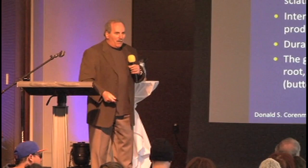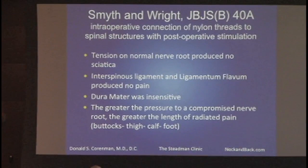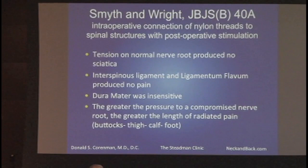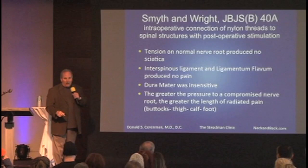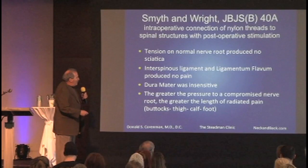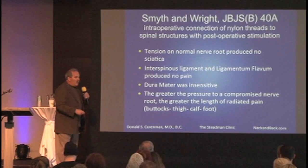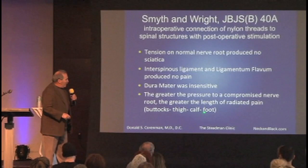How do we know what causes pain? There are some fascinating studies from the 1960s — Smith and Wright out of Britain. They would do spine surgery and loop a nylon suture around different structures — nerve, disc, dura — with labels sticking out. A normal nerve root tensed produces no pain. Interspinous ligament, ligamentum flavum, and dura matter — no pain. Very importantly: the greater the pressure to a compromised nerve root, the greater the length of radiated pain. This is related to McKenzie's centralization concept — a nerve root that's inflamed will radiate distally.